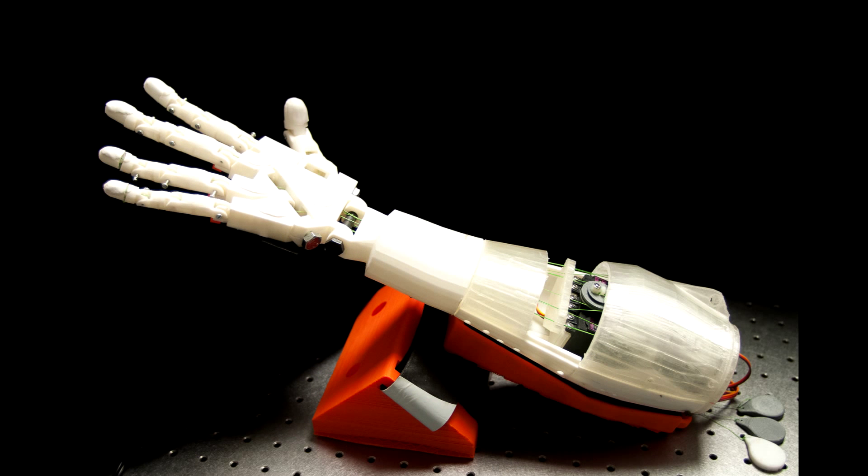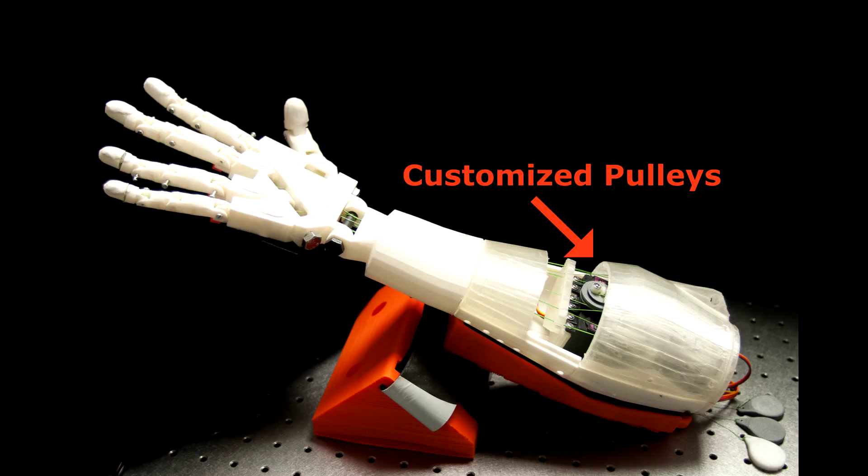In this project, we present a passive linear skin stretch device that can provide proprioceptive feedback when controlling multiple degrees of freedom in a prosthetic hand. We modified an open source 3D printed robot hand developed by InMove with custom pulleys that pull tendons moving both the fingers and contact pads adhered to the forearm. The pulleys and contact pads cost less than $2 in raw materials.